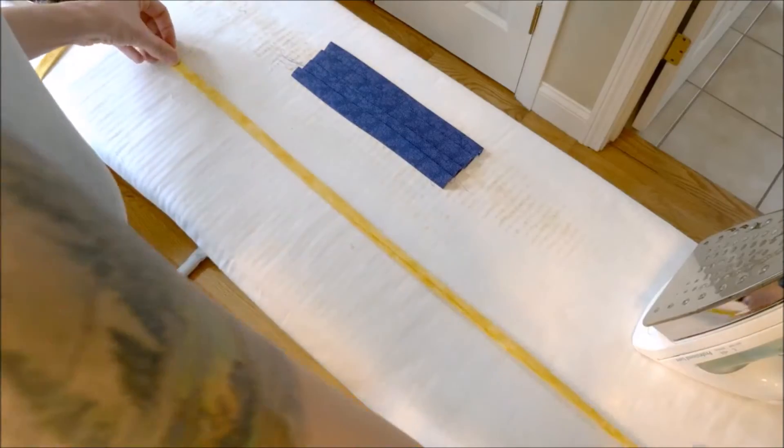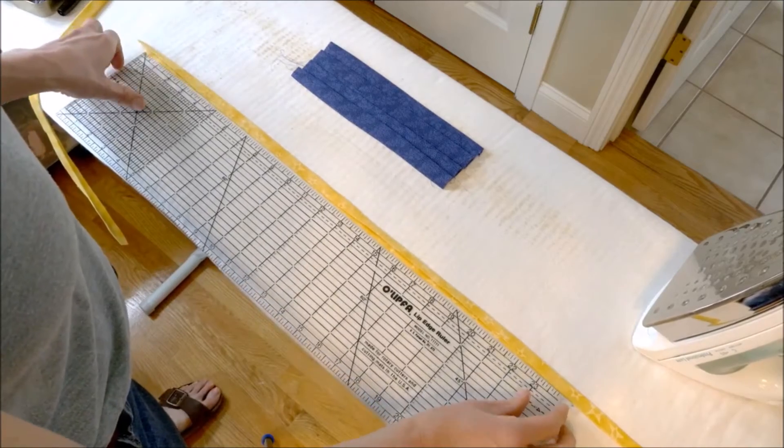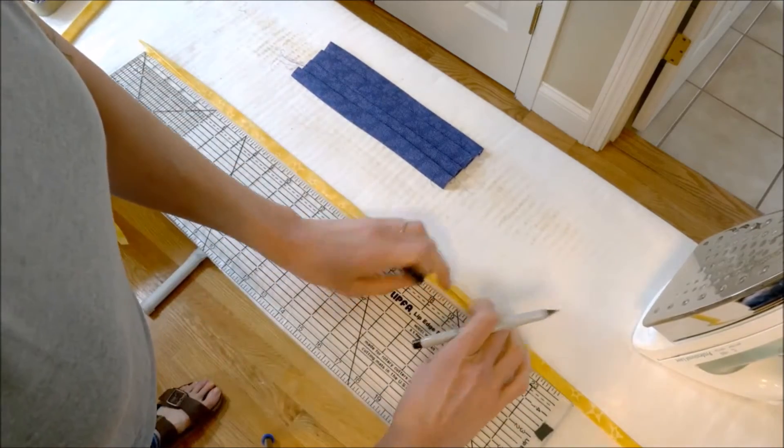Next we take one of our lengths of bias binding and get ready to pin it. Measure 19 inches on the binding and make a mark on the inside. That's where we're going to insert the mask body.